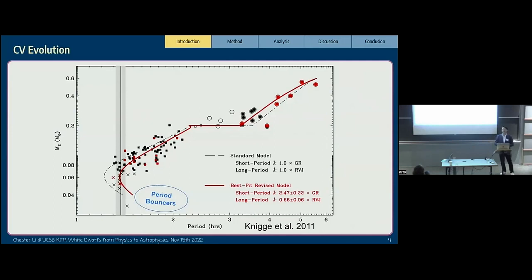Because of angular momentum loss, CVs evolve from long period to short period, and eventually reach a period minimum around 70 minutes. After that, the time scale at which the secondary star loses mass is much shorter than the thermal time scale. So the secondary star will stop shrinking and evolve back toward a longer period. That's why we call it the period bouncer. We expect an accumulation of CV systems near this period minimum, called a period minimum spike.